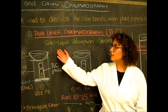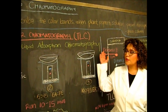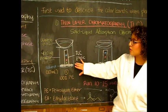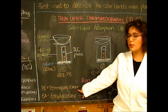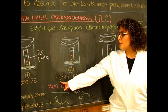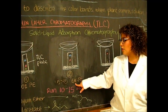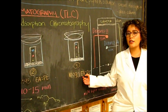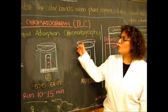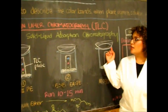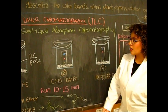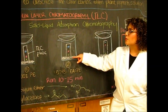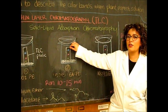For thin layer chromatography, this is a solid liquid absorption chromatography technique. We will be running three experiments in three different 400 mL beakers. In the first beaker we're going to add our solvent which will be 100% petroleum ether. In our second beaker we're going to be adding 5% ethyl acetate and 95% petroleum ether. And for our third beaker we're going to have 10% ethyl acetate and 90% petroleum ether. We're going to be using watch glasses to avoid evaporation and make sure that our environment in the beaker is saturated with the solvent. We will be running our experiments from 10 to 15 minutes but we have to keep monitoring the solvent as we shall remove the TLC plates just before the solvent reaches the top.